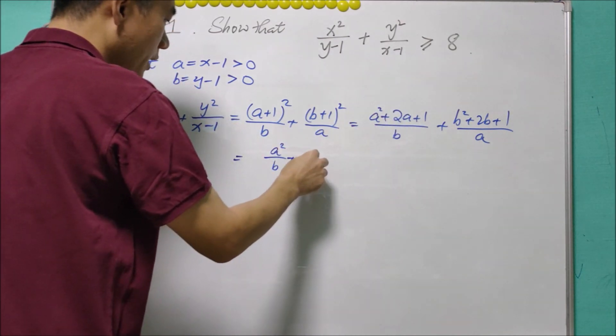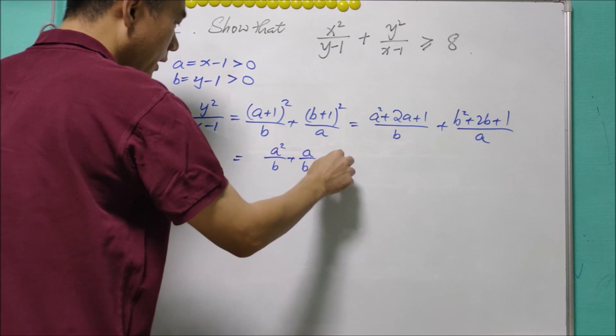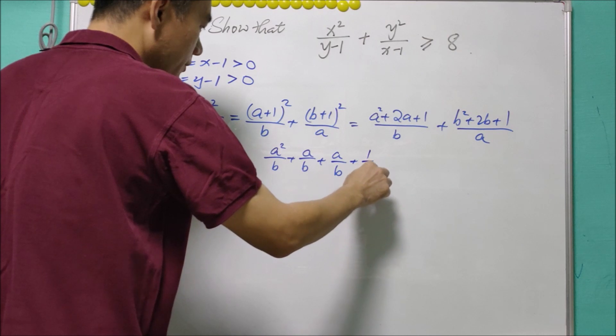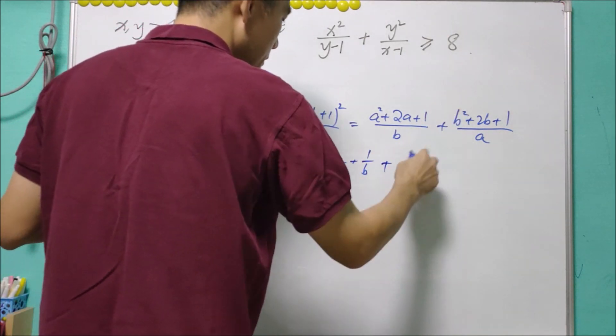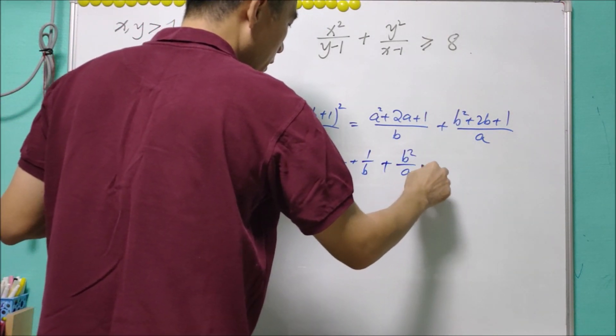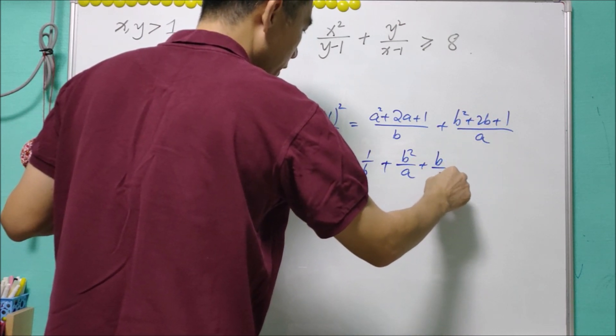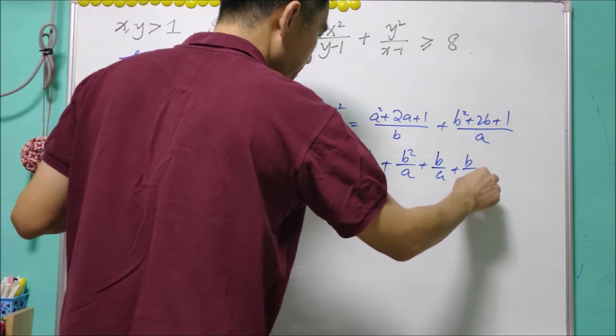...a/b can be written as a/b, a/b, 1/b is 1/b, plus b²/a, plus 2b/a written as b/a plus b/a, and lastly 1/a.